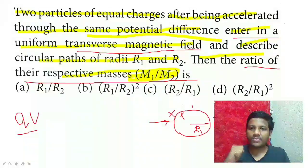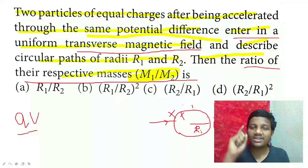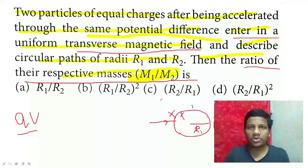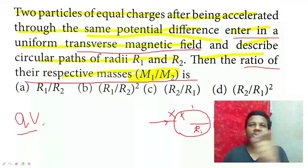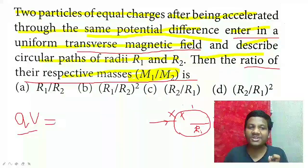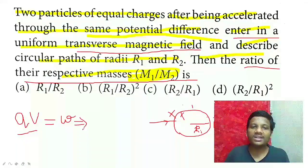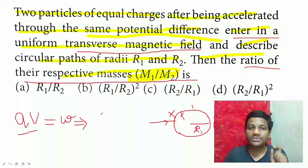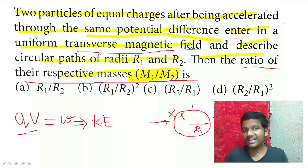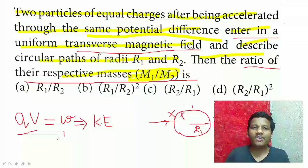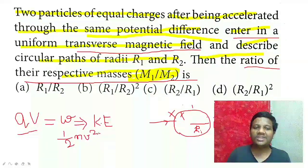First, Q into V - q is common, potential is common. What is the common connecting link between charge and potential? When you multiply these two, what will you get? Recall the formula. Yes, when you multiply charge with the potential difference, that equals the work done. This work done is stored as the kinetic energy of the particles. So QV equals kinetic energy, which is half MV squared.